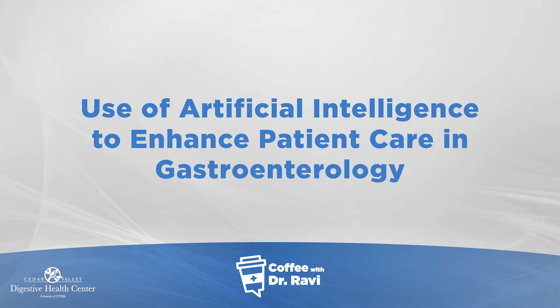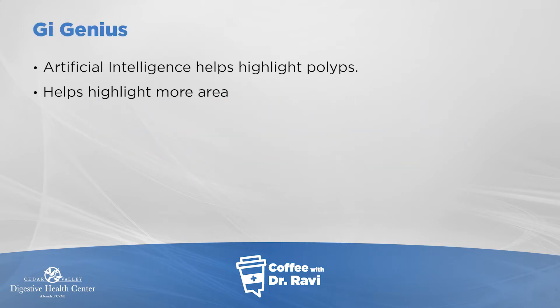There are three examples that I want to use. The first one is what we call GI Genius. When we do colonoscopies, we are looking at the colon walls for bumps and lumps to make sure that there are no polyps. What GI Genius does is an artificial intelligence program that sits on top of what we are doing and helps us highlight those polyps being picked up by artificial intelligence.